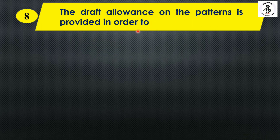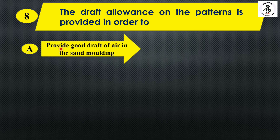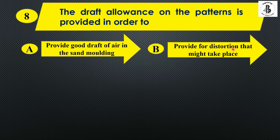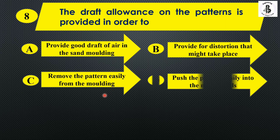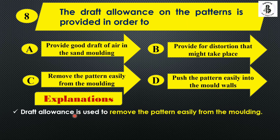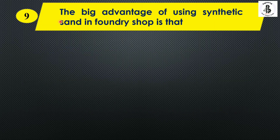The next question: draft allowance on patterns is provided in order to — option A: provide good draft of air in sand molding; option B: provide for distortions that might take place; option C: remove the pattern easily from the molding; option D: push the pattern easily into the mold walls. Draft allowance is used to remove the pattern easily from the mold, so the right answer is option C.